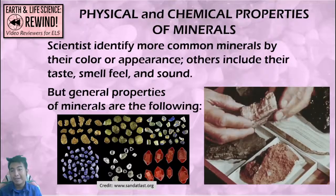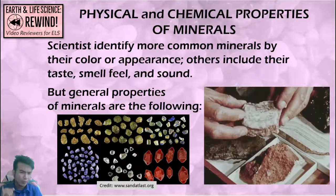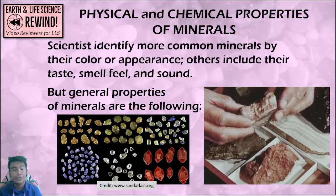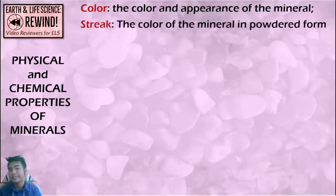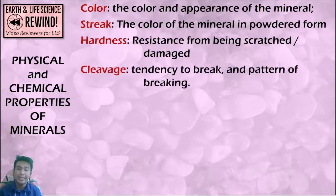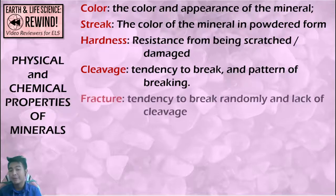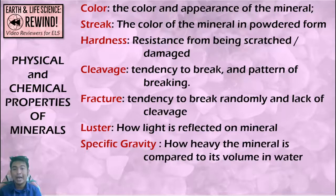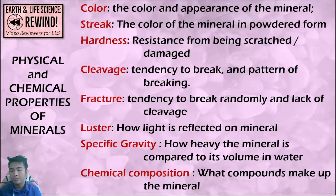Scientists identify common minerals by many factors — not just color or appearance, but also general properties: color, the color and appearance of the mineral; streak, the color of the mineral in powdered form; hardness, its resistance to being scratched; cleavage, the tendency to break and the pattern of breaking; fracture, when there is no pattern of breaking; luster, how light is reflected on a mineral; specific gravity, how heavy it is compared to its volume and water; and chemical composition, what compounds make up that mineral.